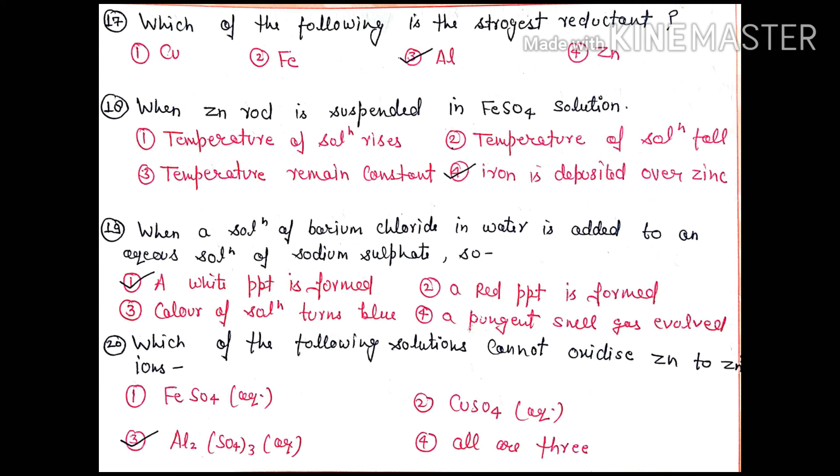Question 19: When a solution of barium chloride in water is added to an aqueous solution of sodium sulfate, a double displacement reaction occurs and a white precipitate of barium sulfate forms. So the right option is 1.